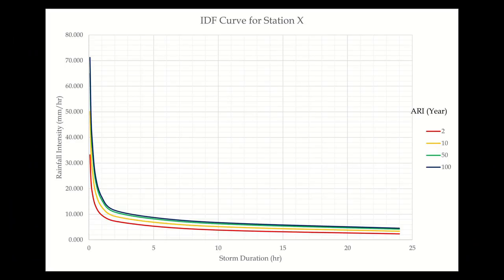At this point, we can plot the curve of rainfall intensity against rainfall duration for each ARI. These curves are now known as IDF curves.